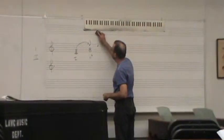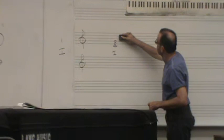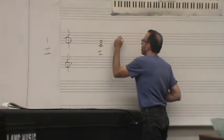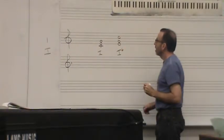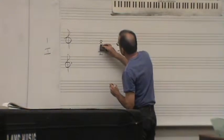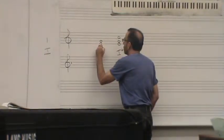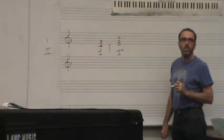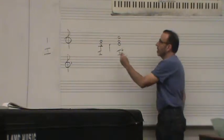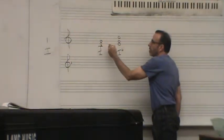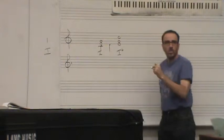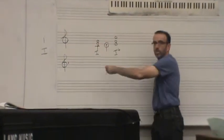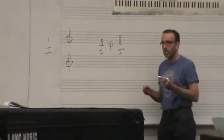Right, so an example of that would be if I'm going from a 1 to a 1-6, let's say. And I decided to do this in the lower part. So as I move, I approach by step and leave by step in the same direction, passing tone. But this note is dissonant to this harmony here. The D is dissonant to the C harmony that's going on.